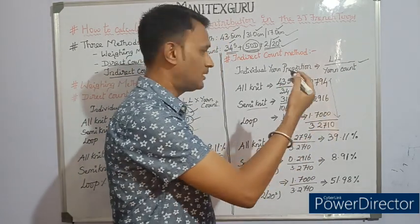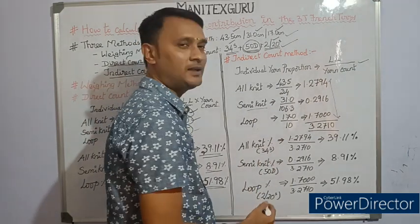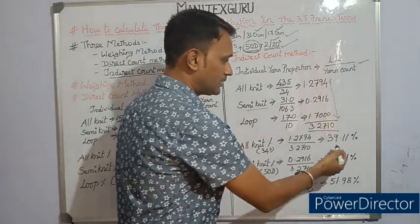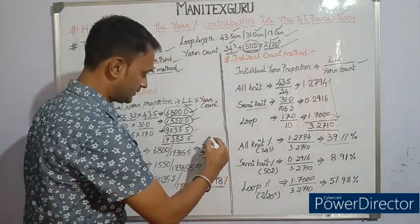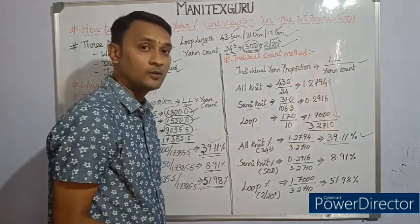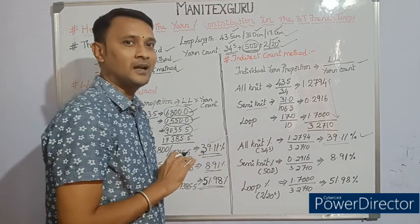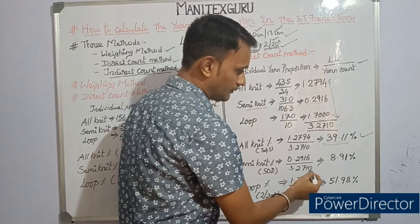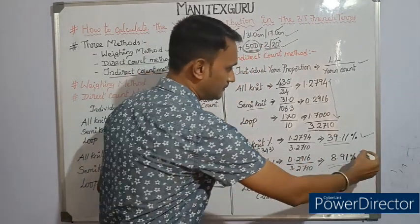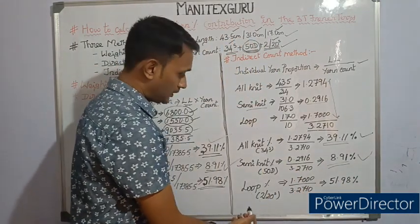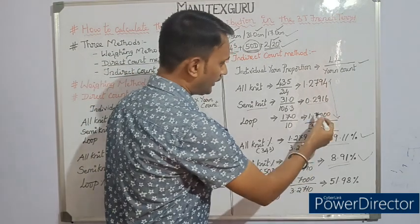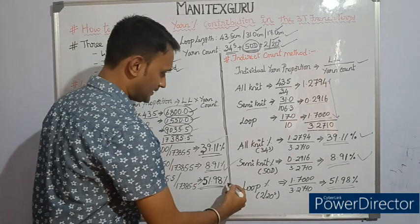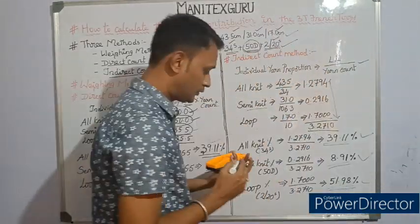Now dividing each individual yarn proportion by the total yarn proportion gives the percentage contribution. All-knit 34s: 1.2794 divided by 3.2710 gives 39.11% — exactly matching the direct count method result. Semi-knit 50 denier (0.2916) divided by 3.2710 gives 8.91% — again exactly matching. Looper 2-bar 20s (10s count): 1.700 divided by 3.2710 gives 51.98% — exactly matching the direct count method.